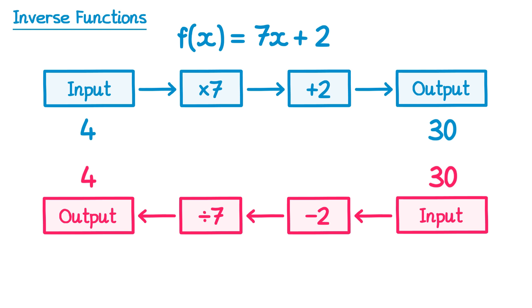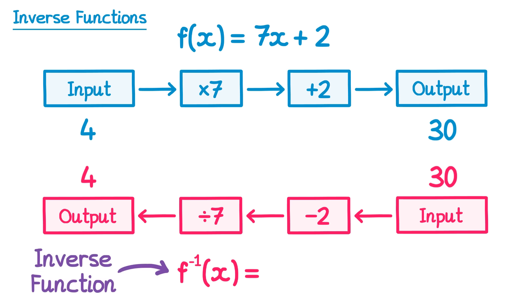The original function was f(x), and the inverse function is written with a negative 1 — f⁻¹(x). This simply means the inverse function. You shouldn't confuse that negative 1 with a power of negative 1; it doesn't act as a number here, it's just the notation for an inverse function. We just worked out this function: we first subtracted 2 and then divided by 7. So the inverse f(x) equals (x − 2) ÷ 7.